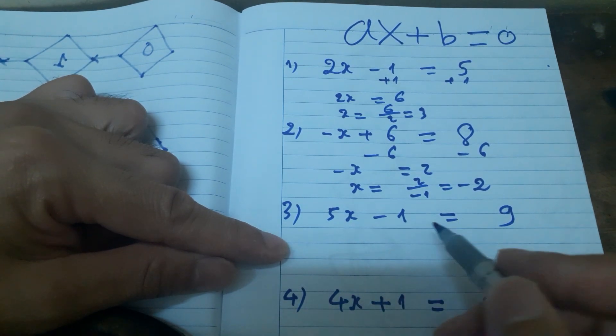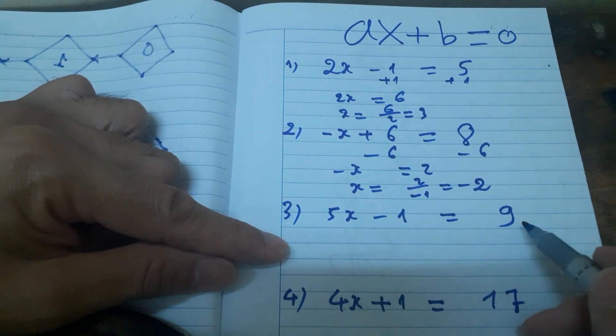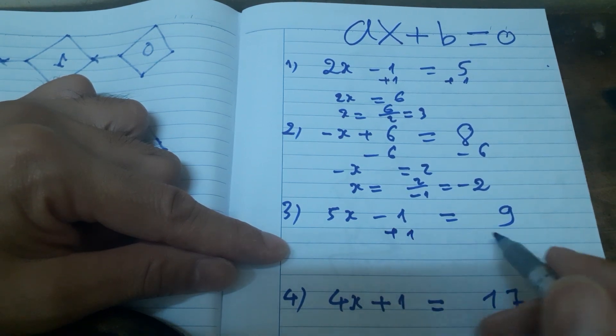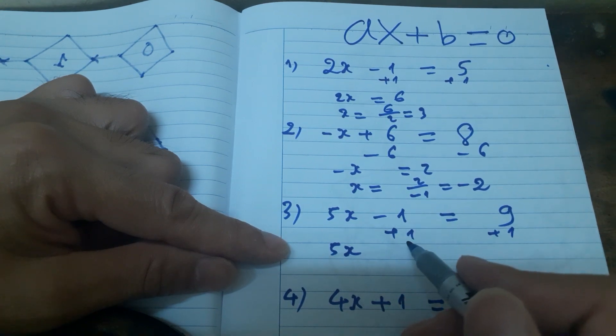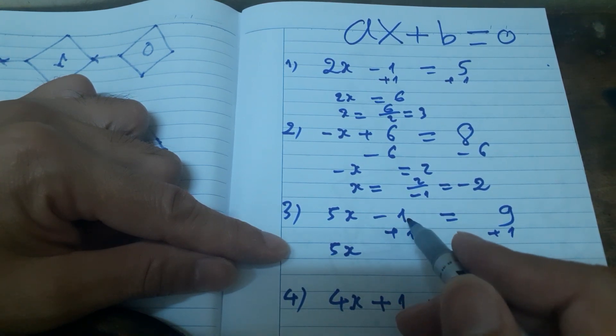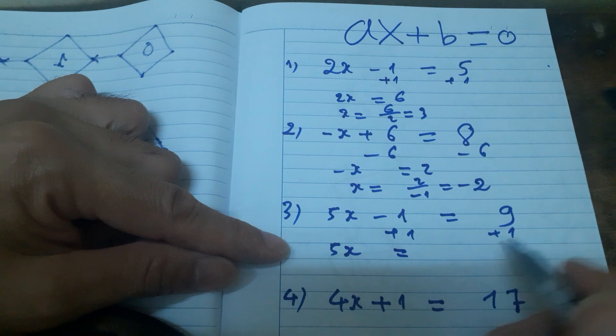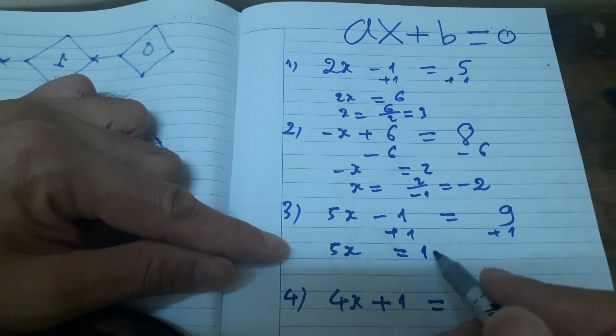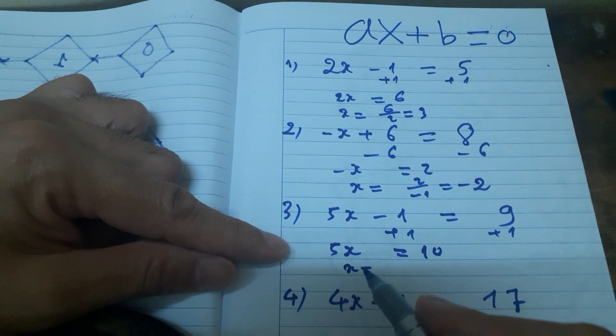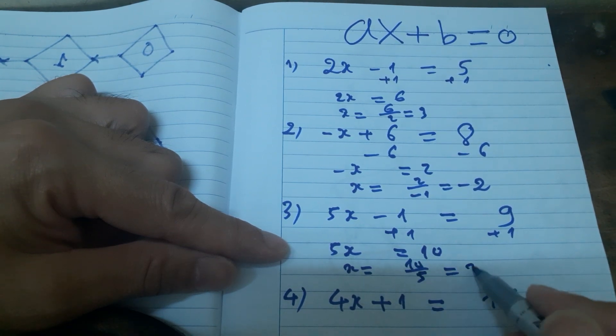Example 3: 5x - 1 = 9. Move the -1 to the other side. 5x minus 1 plus 1 equals 0. 9 plus 1 equals 10. x equals 10 divided by 5, equals 2.